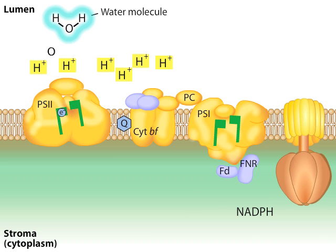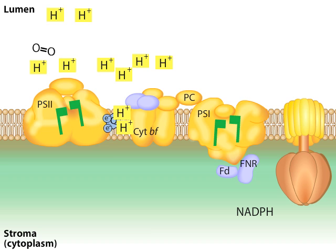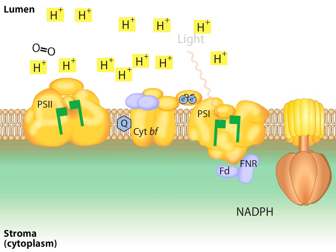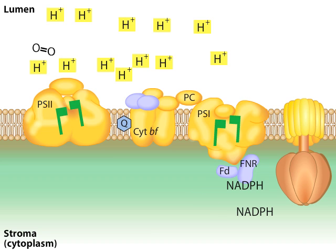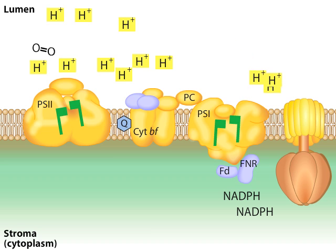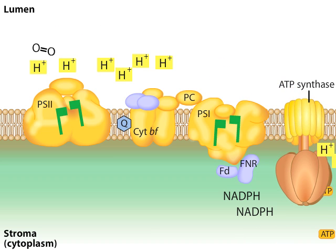After two more photons are absorbed by Photosystem II, molecular oxygen is formed from the original two water molecules. Photosystem I also absorbs two additional photons, and ferredoxin NAD reductase produces a second molecule of NADPH. The accumulation of hydrogen ions across the membrane represents potential energy. The hydrogen ions will have a tendency to cross the membrane through ATP synthase, providing the energy to join ADP and inorganic phosphate into ATP.